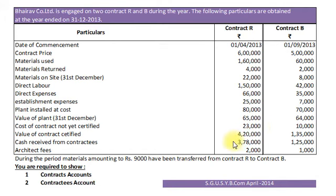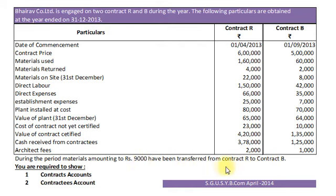Value of contract certified, this is nothing but Work Certified, will be recorded in Contract Account on Credit side under Work in Progress. Cash received from Contract T will be recorded in Contract T's Account on Credit side by general entry Bank Account Debit to Contract T's Account Rs. 3,78,000. Architect Fees Rs. 2,000 will be recorded in Contract Account on Debit side as an expense. During the period, materials amounting to Rs. 9,000 have been transferred from Contract R to Contract B. So accounting entry will be receiving Contract Account Debit to giving Contract Account.